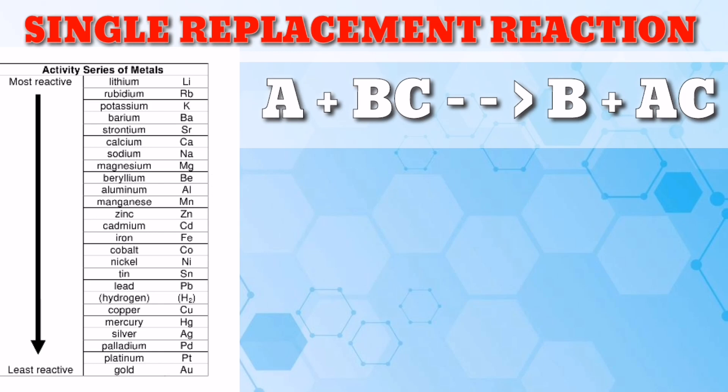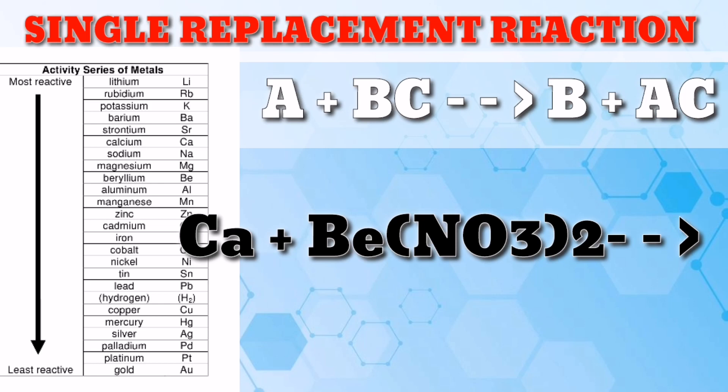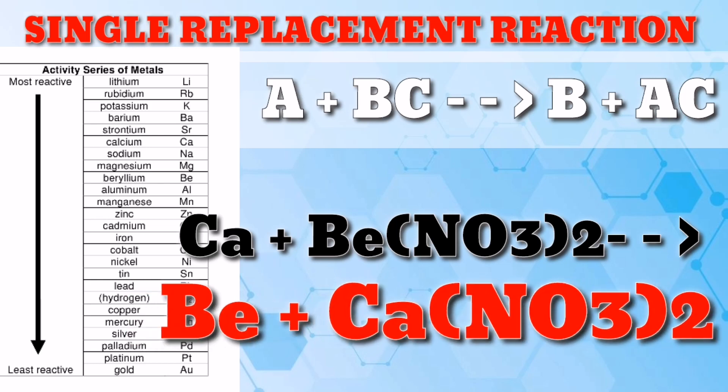Let's proceed to the next example, calcium added with beryllium nitrate. Look at the activity series. Is calcium more reactive than beryllium? Yes, it is. Therefore, it can replace beryllium. Hence, the products are beryllium plus calcium nitrate.